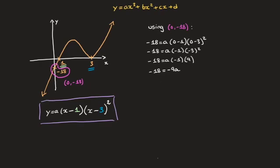Finally, dividing both sides of this equation by negative 9, we obtain negative 18 over negative 9 equals a, in other words, 2 equals a, or simply a equals 2. And we now have the value of this cubic polynomial's leading coefficient. And that's 2.